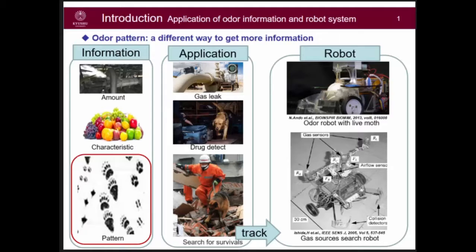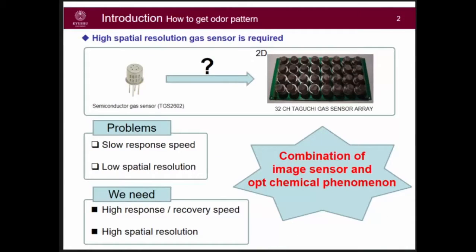However, the shape of an odor trace has not received much attention. This is the commonly used semiconductor gas sensor for odor robots — it's an array for two-dimensional sensing. The problem is its slow response speed, typically taking tens of seconds, and its low spatial resolution.